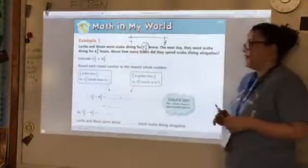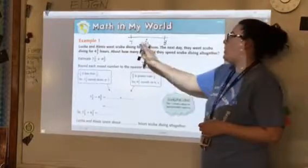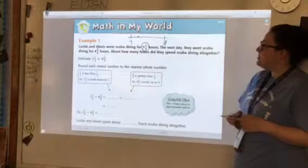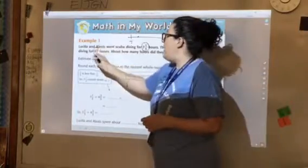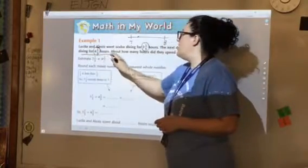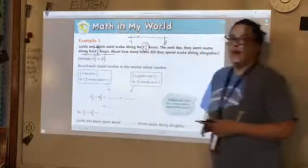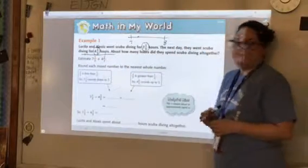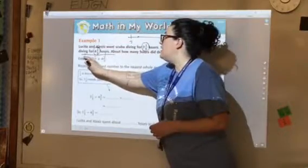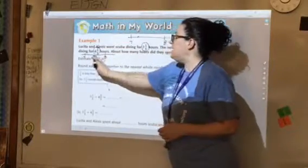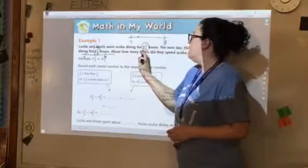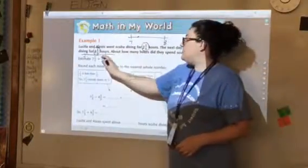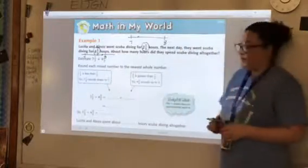Is it closer to seven or eight? Seven. Seven, because it's one-third. So it would be like right here. The next day, they went scuba diving for four and two-thirds hours. What two numbers would four and two-thirds go between? Four. Four and five. Four and five. It's closer to five. So it's always going to be this number and then the next number that will come on the number line. And it is closer to five because it's two-thirds.